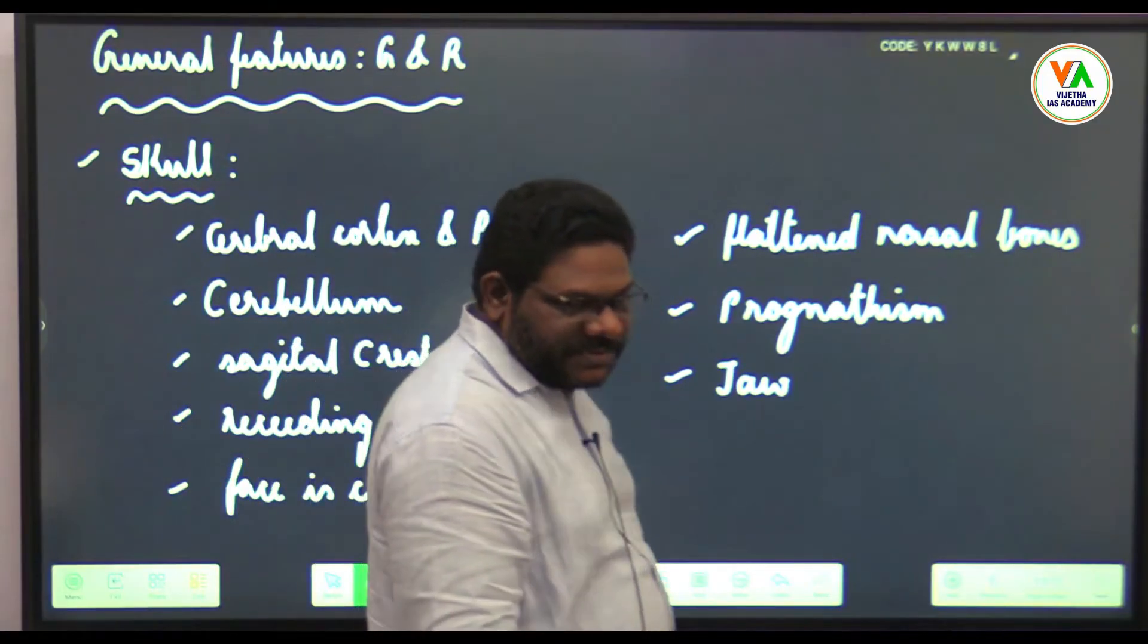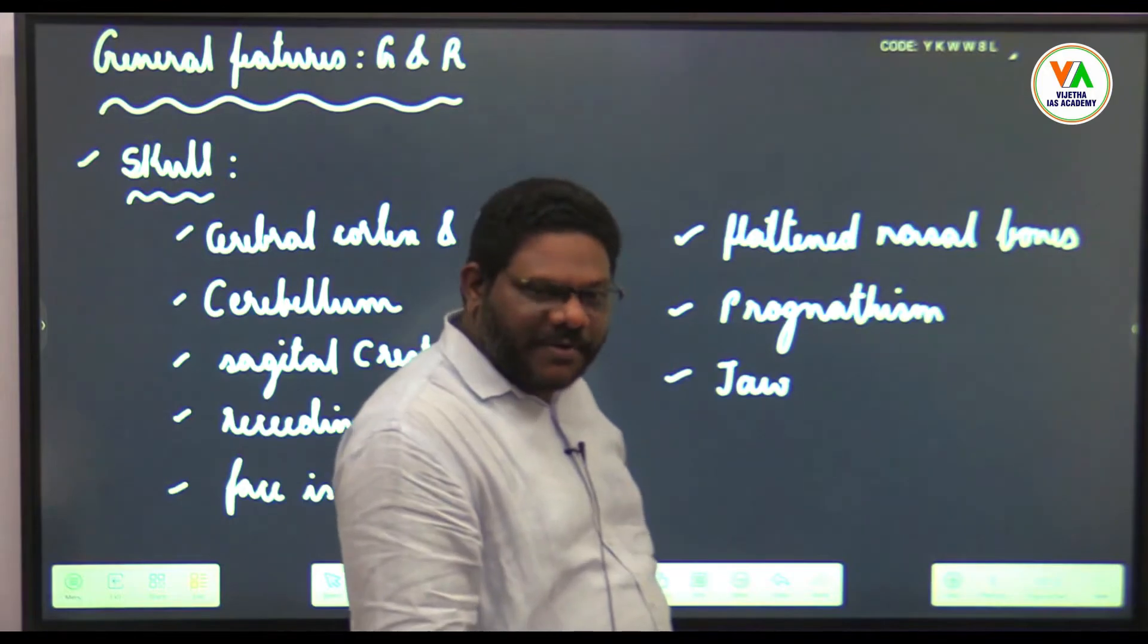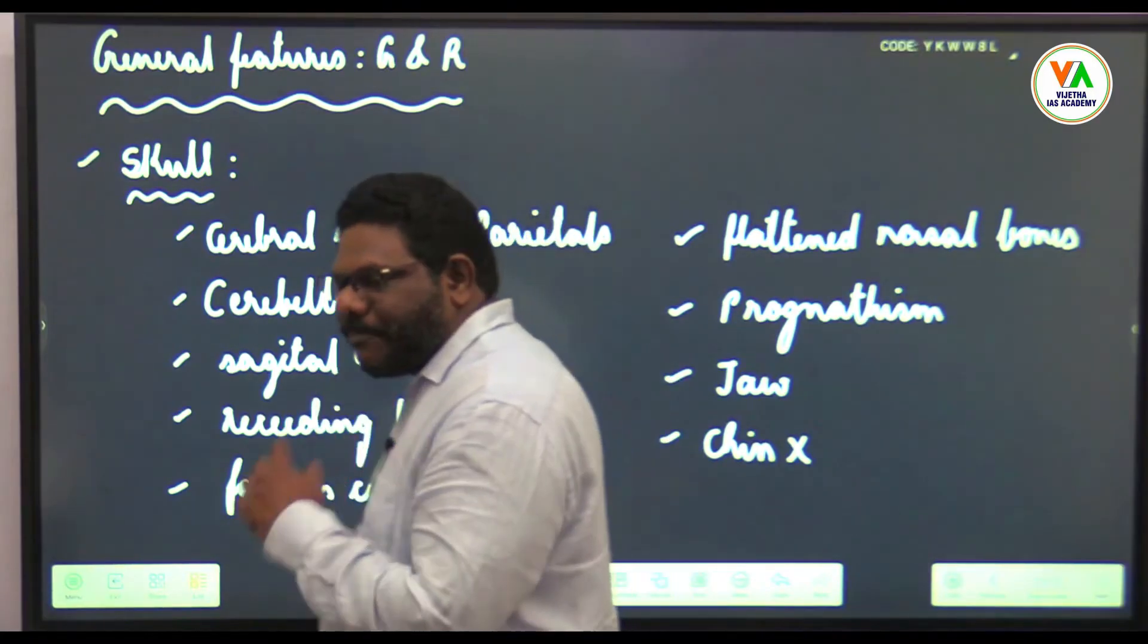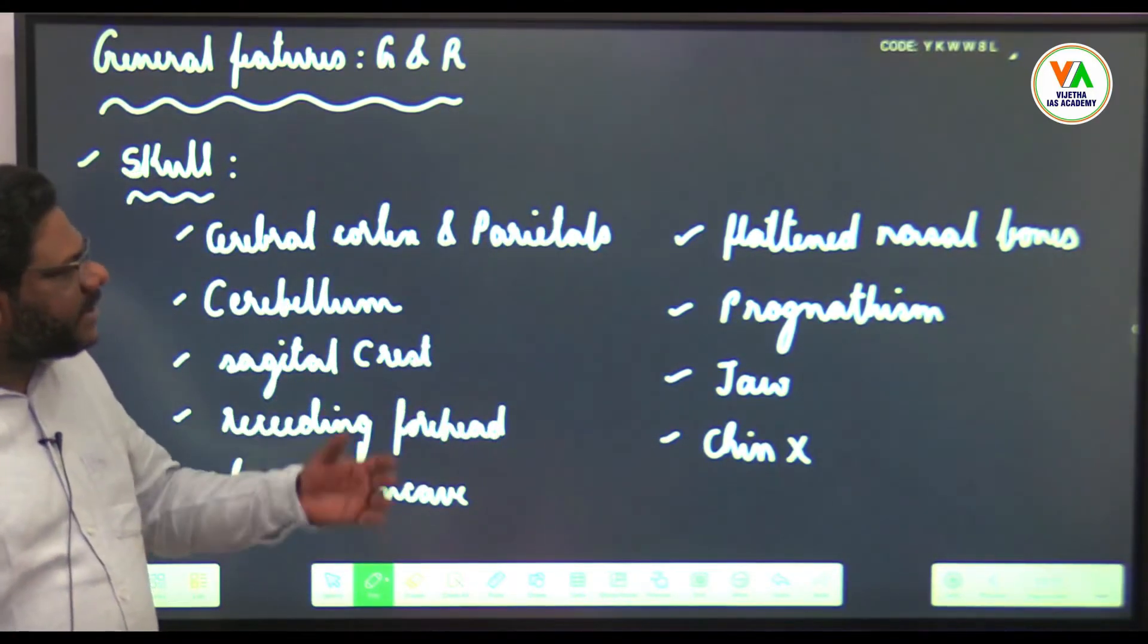Jaws are also massive. Chin is absent. To summarize: cerebral cortex and parietals well developed—related to speech. Cerebellum—related to movement and balance. Sagittal crest—chewing hard diet. Receding forehead—ape-like character. Concave face due to prognathism, flattened nasal bones. Jaws thick and massive, chin absent. These are the striking features.